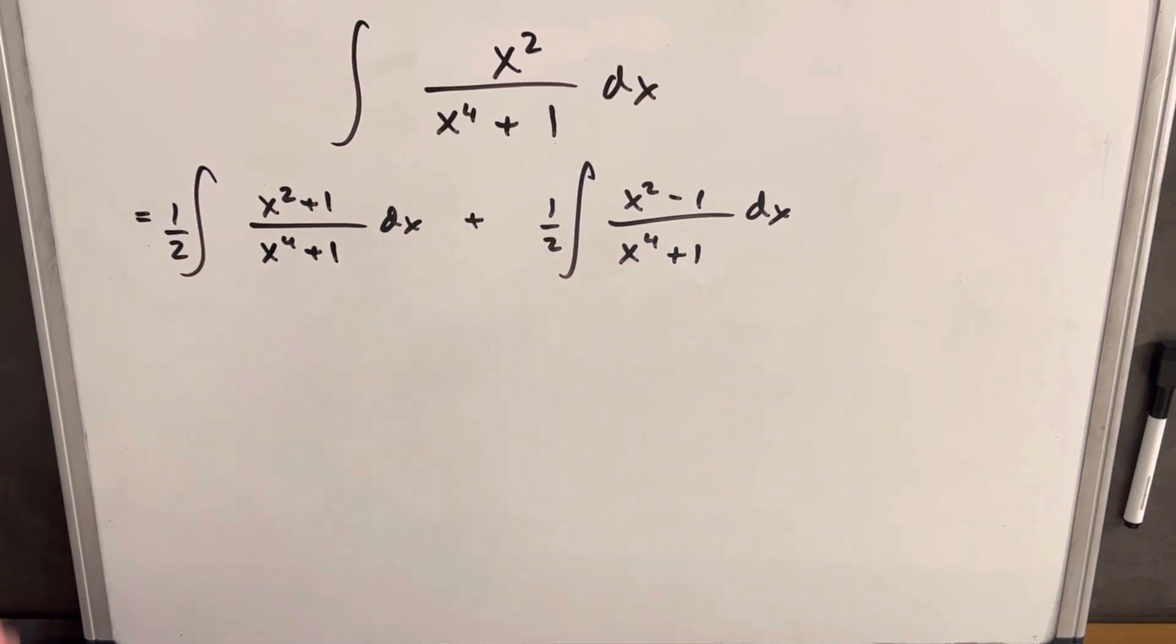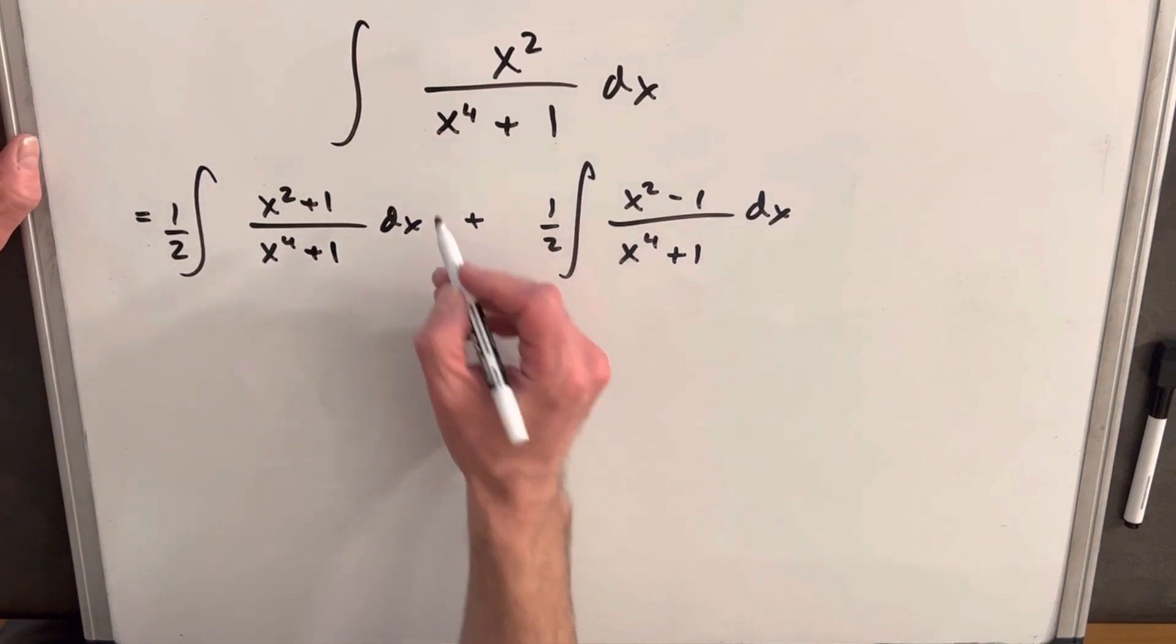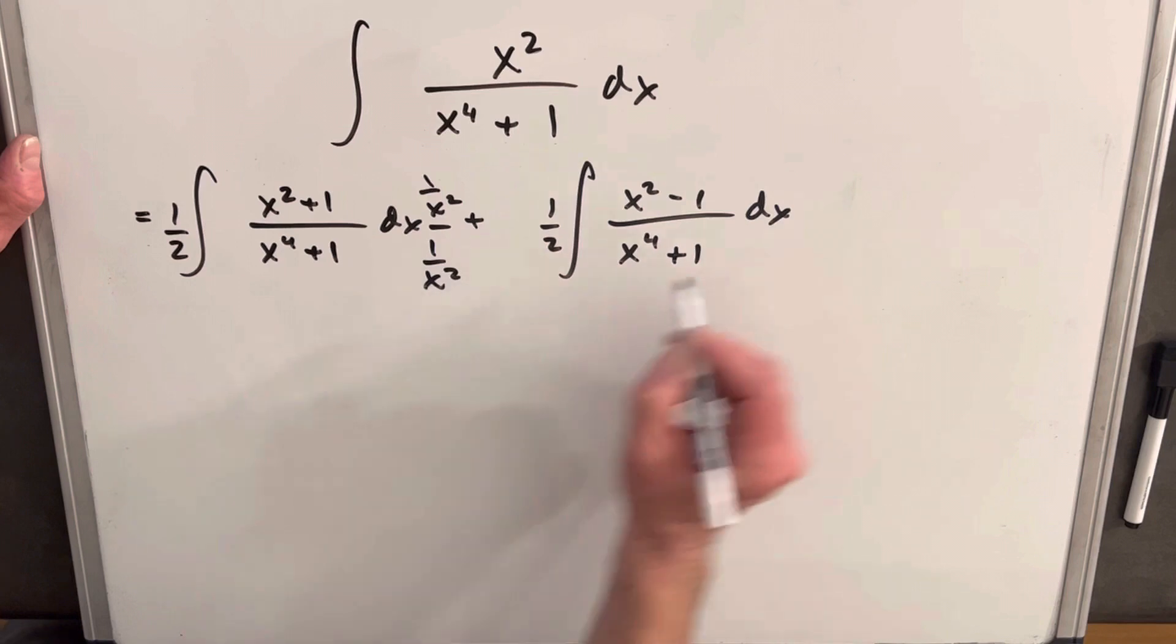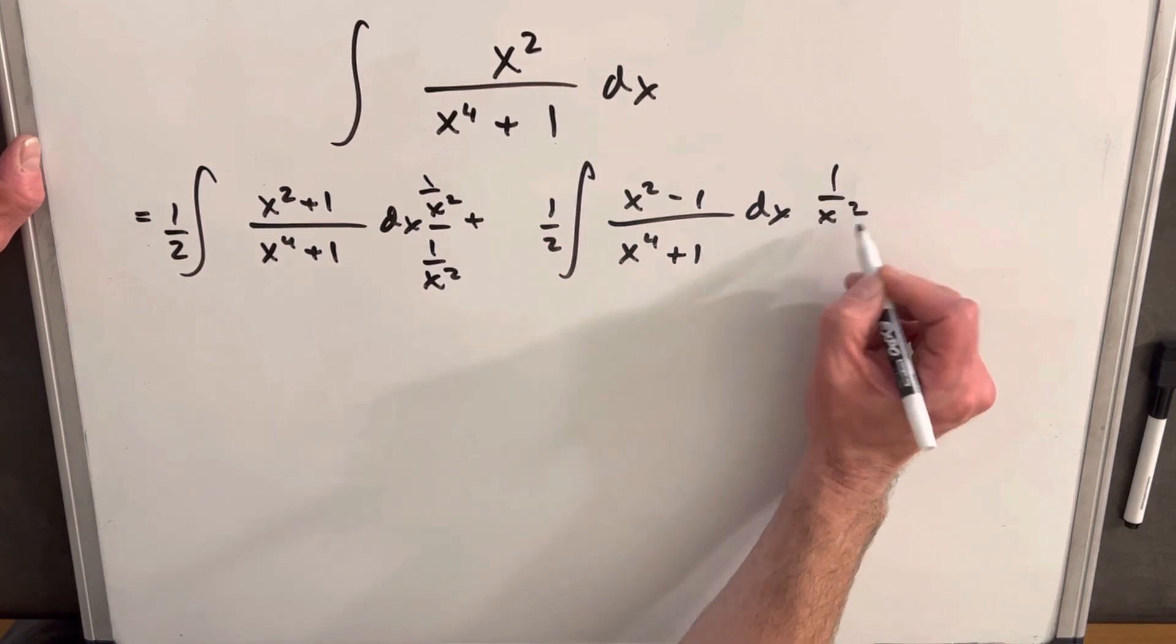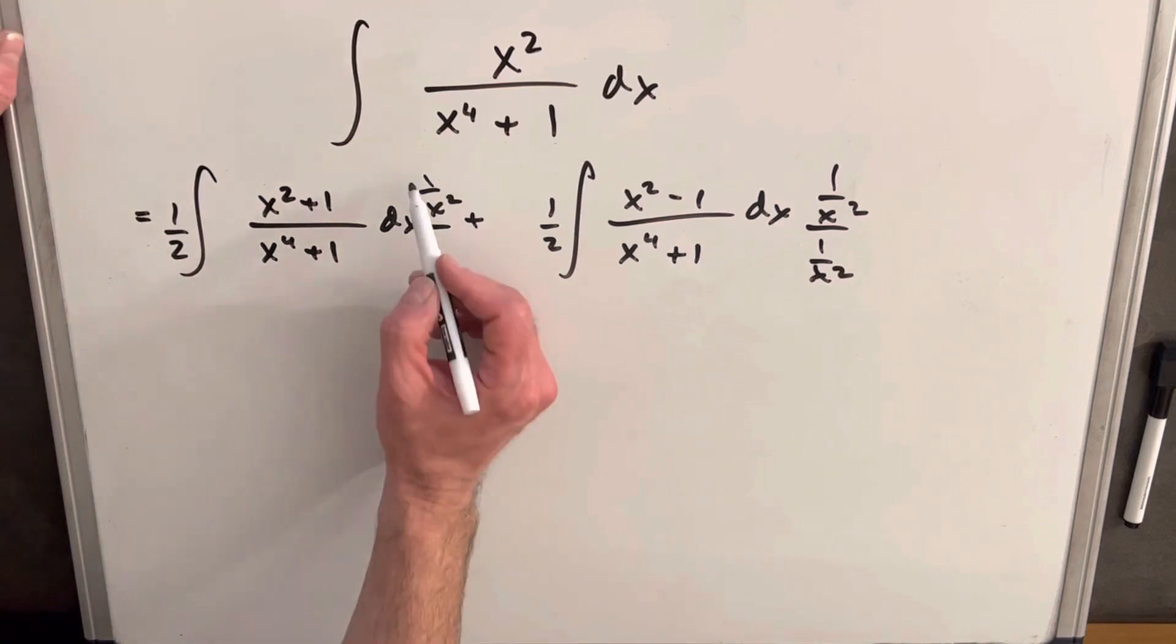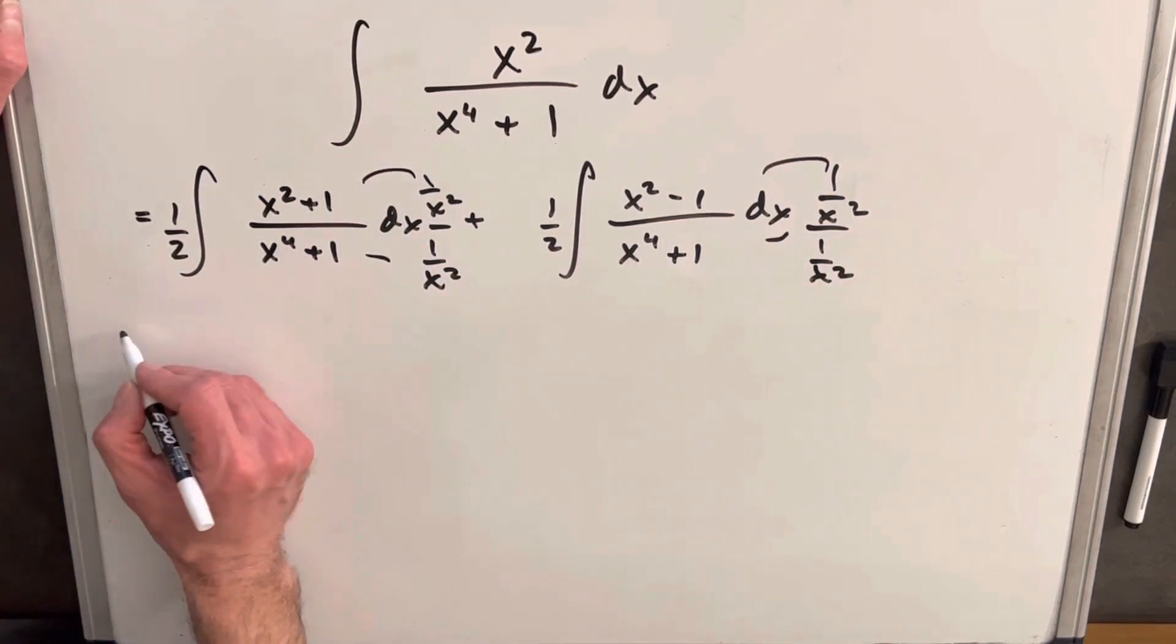I have a trick that we've done in some previous videos. What we're going to do on both of these is multiply numerator and denominator by 1 over x squared, and I think you'll see this is going to help quite a bit. We just need to distribute this in here.